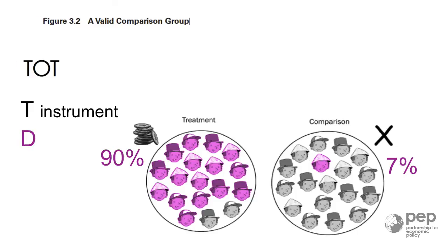The adjustment we do uses the probability of obtaining credit in each treatment group. In the graphic, this is the probability of becoming purple. For those household heads in the treatment group, this probability is very high, it's 90%.